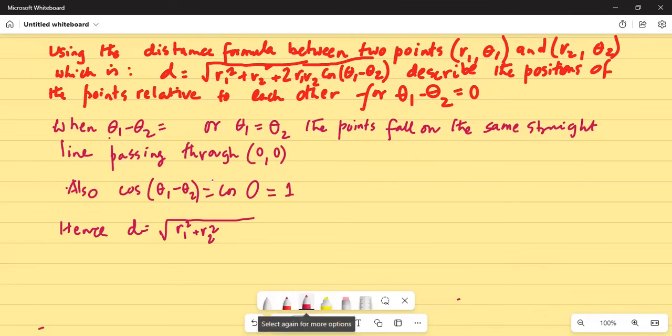So here it becomes plus. There is also a mistake here, it is not plus, this should be minus. So this becomes minus 2 r1 r2 cosine of zero.